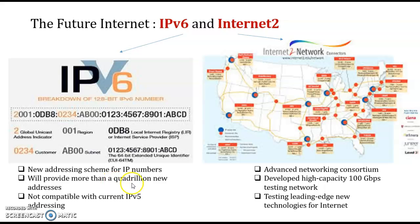IPv6 will provide more than quadrillions of new addresses and is not compatible with the current IPv4 addressing. We are now changing into Internet 2 — an advanced networking consortium that develops high-capacity 100 gigabit-per-second testing networks and tests leading-edge new technologies for the internet, because now we are moving into something live and dynamic: watching online, playing online, listening online. Internet 2 and IPv6 will support this — it is about the future of the internet.